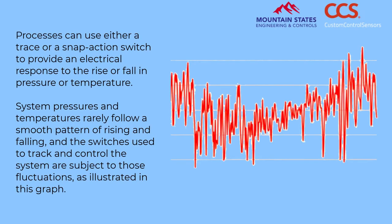Processes can use either a trace or a snap action switch to provide an electrical response to the rise or fall in pressure or temperature. System pressures and temperatures rarely follow a smooth pattern of rising and falling, and the switches used to track and control the system are subject to those fluctuations, as illustrated in this graph.